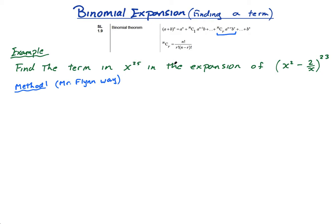It says find the term in x^25 in the expansion of (x^2 - 2/x)^23. I'm going to go straight to this part of the formula. It's 23 choose r. I don't know what r is, so I'm going to put a box. The first term is x^2, so I put a bracket and x^2, and I'm going to put a box there because it's to the power of something. And then the second term is -2/x, and I'm going to put a box here because I don't know what that is to the power of.